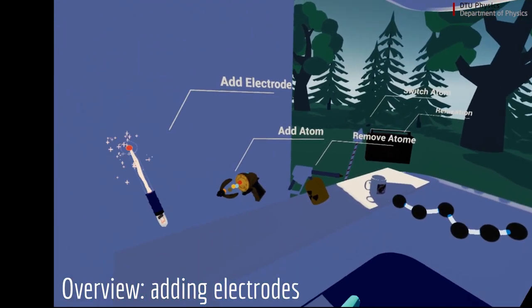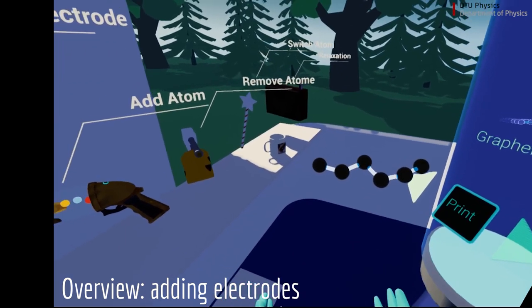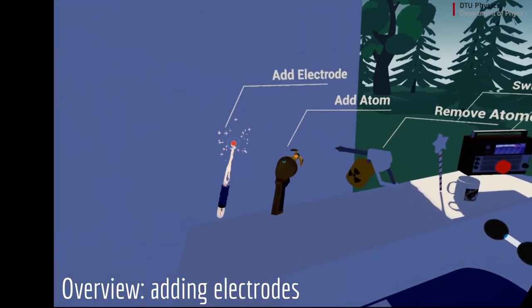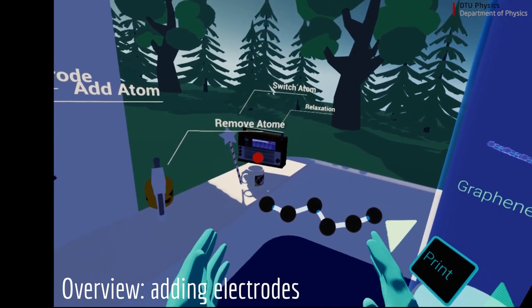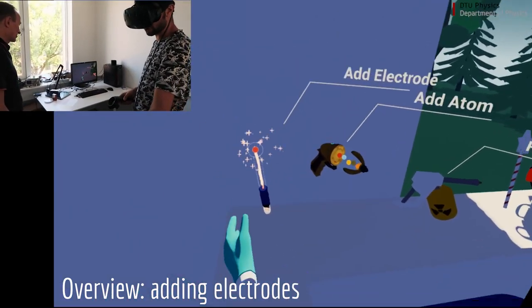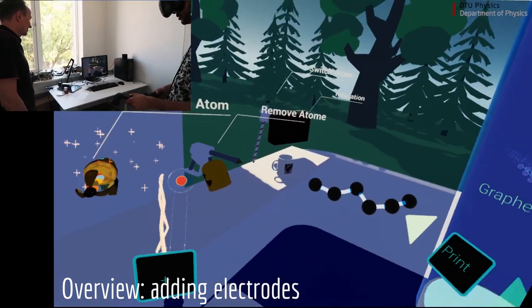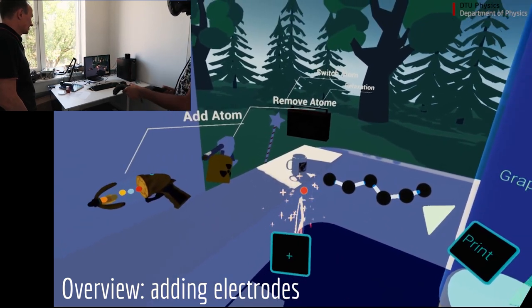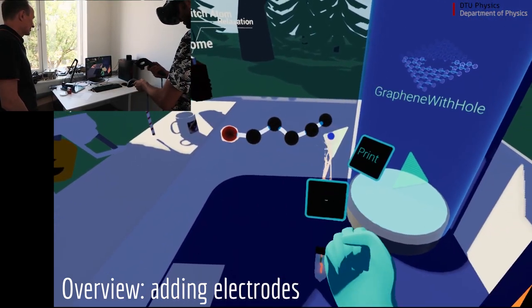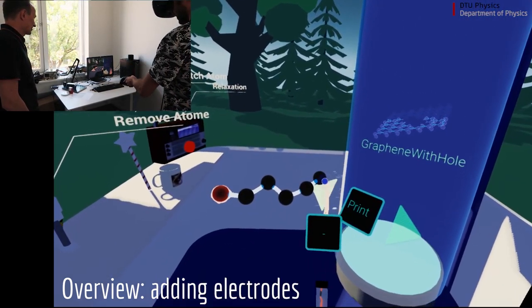And then once you've created a molecule, let's say this is the one I wanted to build, I can start doing some measurements on it. So I can just grab this tool that allows me to add electrodes. I will add a positive electrode and a negative electrode here.